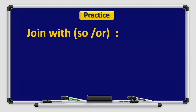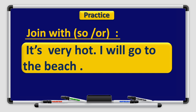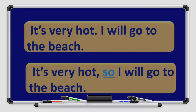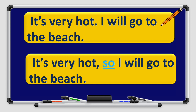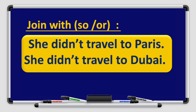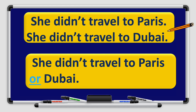First practice: It's very hot. I will go to the beach. Answer: It's very hot, so I will go to the beach. Why am I going to the beach? Because it is very hot — that is why we use the conjunction 'so'. Second practice: She didn't travel to Paris. She didn't travel to Dubai. Answer: She didn't travel to Paris or Dubai. Here two sentences are joined in negative form using the conjunction 'or'.